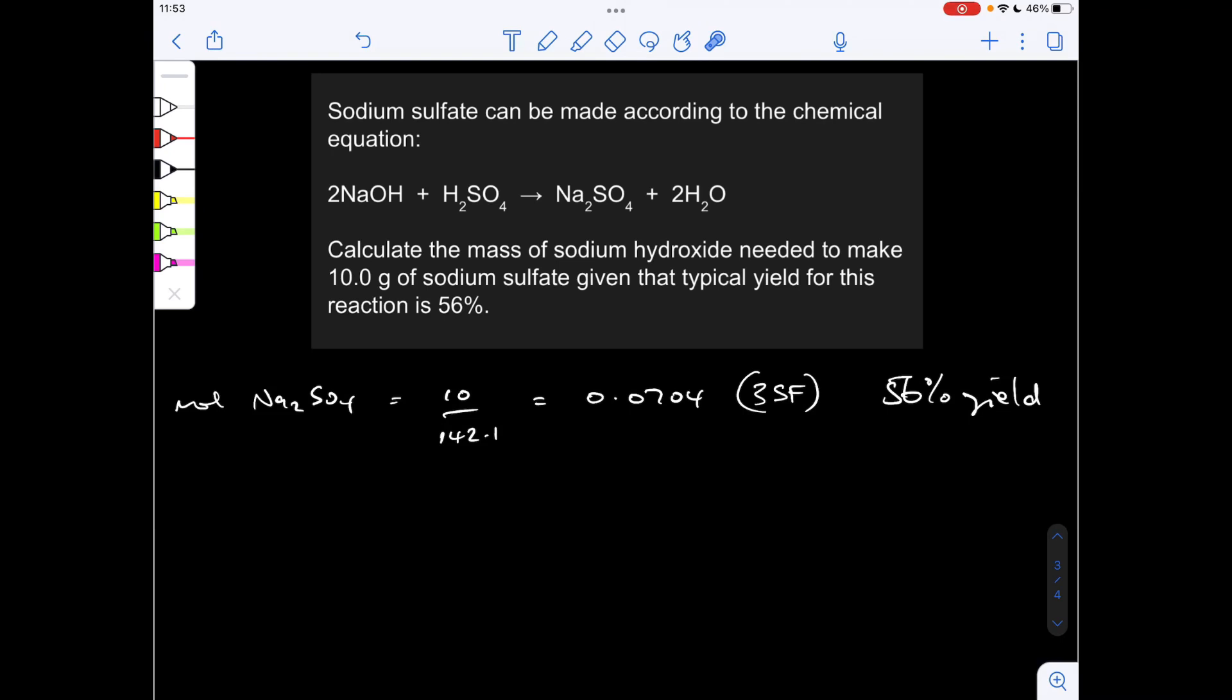So the moles of sodium sulphate that we want to make, mass over MR, 0.0704 to three significant figures. The full number, by the way, is in the calculator, but I'm reporting to three significant figures.